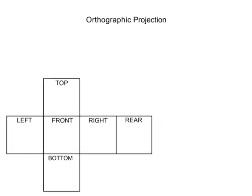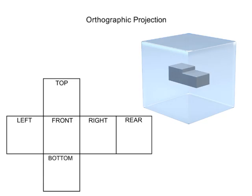To obtain each of the views of an object, imagine that the object is within a glass box. Each side of the object gets projected onto the wall of the box. That projection is then shown as its own view on a two-dimensional drawing.